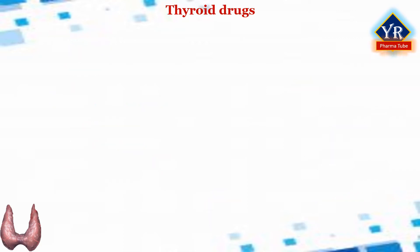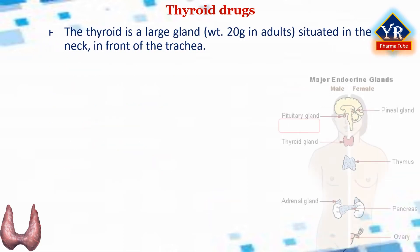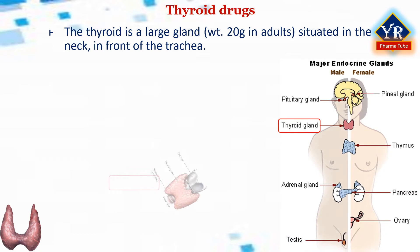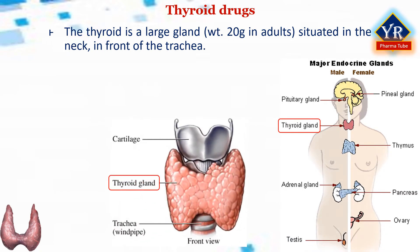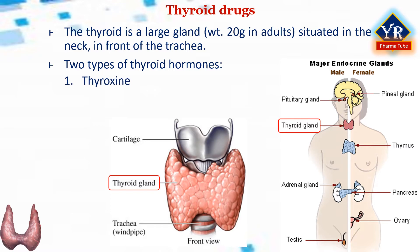Introduction to thyroid drugs. The thyroid is quite a large gland weighing about 20 grams in adults, situated in the neck in front of the trachea. In shape, the thyroid consists of two lobes and looks like a butterfly. This thyroid gland secretes two types of hormones which are fundamentally different. One type includes the hormones thyroxine and triiodothyronine which are necessary for normal growth and development, body temperature, and energy levels.